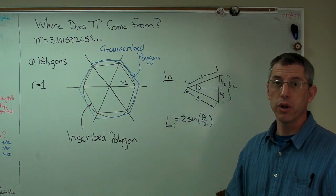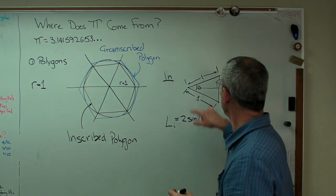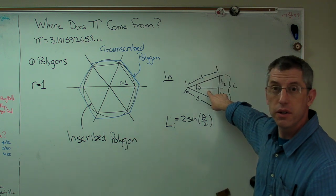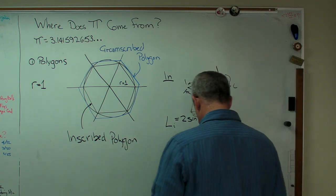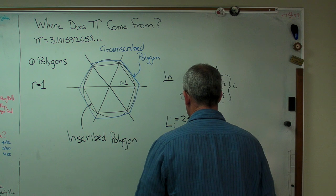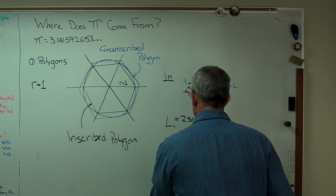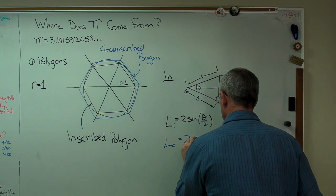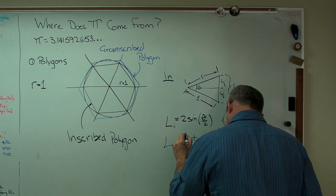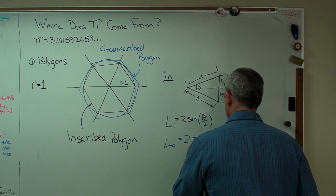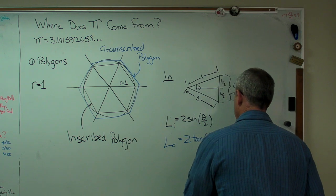For the circumscribed one, we're going to do almost the same thing, except instead of that being 1, this length will be 1. So switch to blue here. I guess C for circumscribed, it's 2, and I believe it's tangent. Make sure I get this right. Okay.